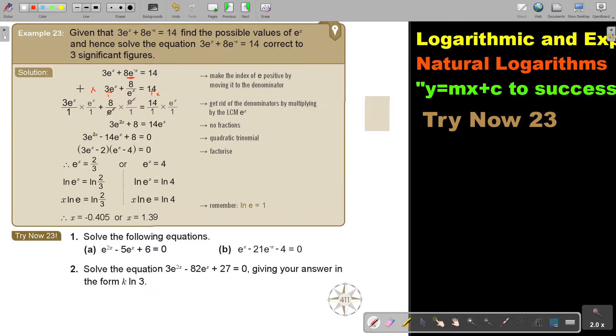So here I multiply e to the power x over 1, multiply e to the power x over 1, multiply e to the power x over 1. So this will cancel. Then I will basically sit there, do you see? So the bases are the same and I add the exponents. So x plus x will be 2x. This cancel, did you see? And this is 14e to the power x.